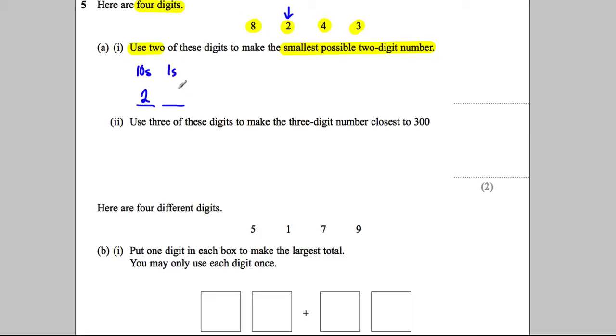Now I've used the 2. I want to make the smallest ones and I'll choose 3, which is the next smallest number left. So 23 using the digits 2 and 3 gets us the smallest two-digit number.